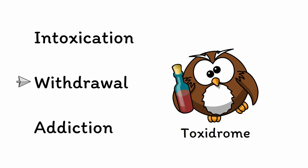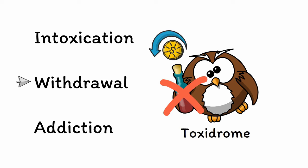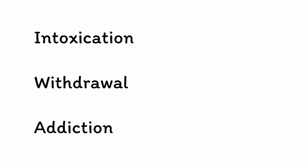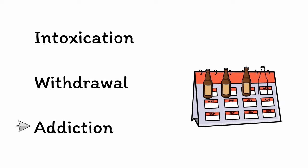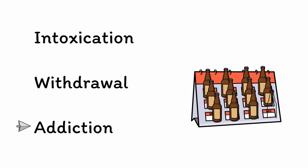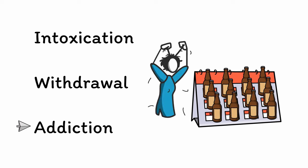Withdrawal is also an acute state, but it involves the physiological and psychological effects of suddenly stopping a substance, which are often the opposite of what you would see in a state of intoxication from that same substance. In contrast, addiction is a chronic condition characterized by repeatedly using a specific substance or engaging in a behavior despite suffering negative consequences as a result. When this involves drugs, it is known as a substance use disorder.